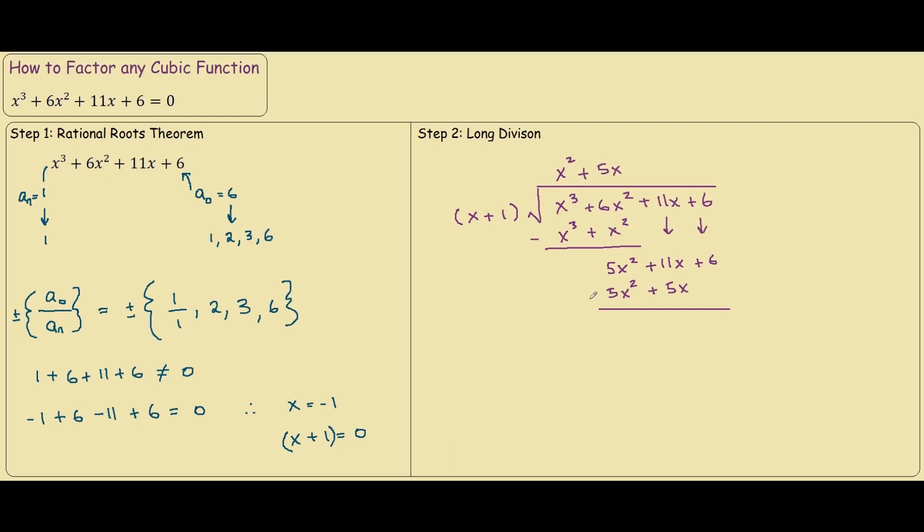Again, minus it, and you get 11x minus 5x is 6x, plus 6. Again, focus on the 6x. What we need to multiply x plus 1 by to get 6x plus 6, we need to multiply it by 6.